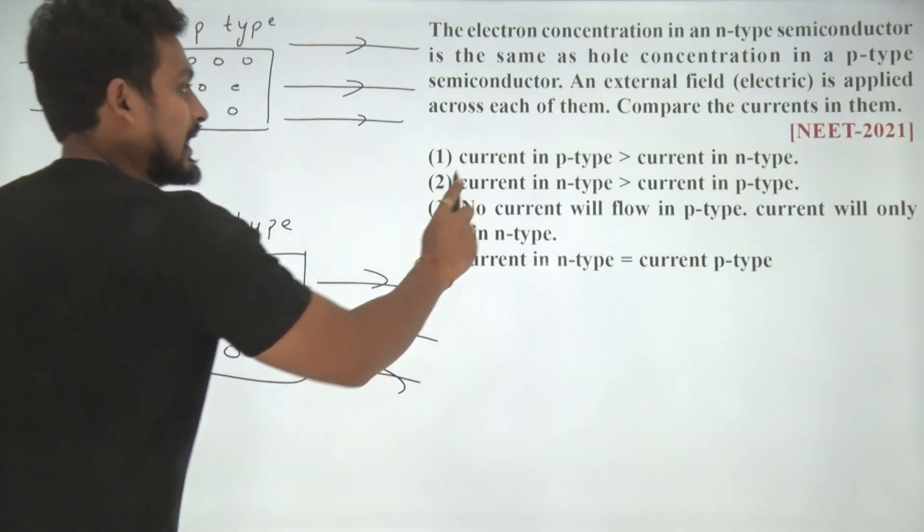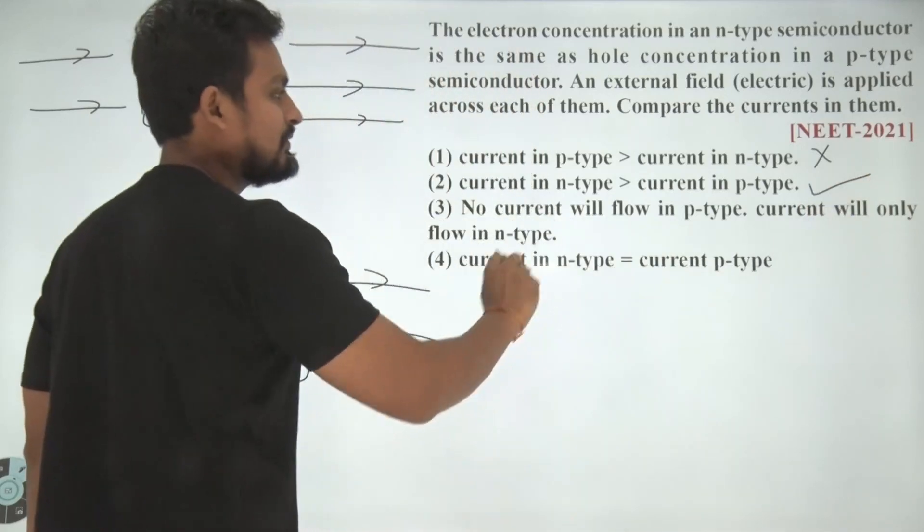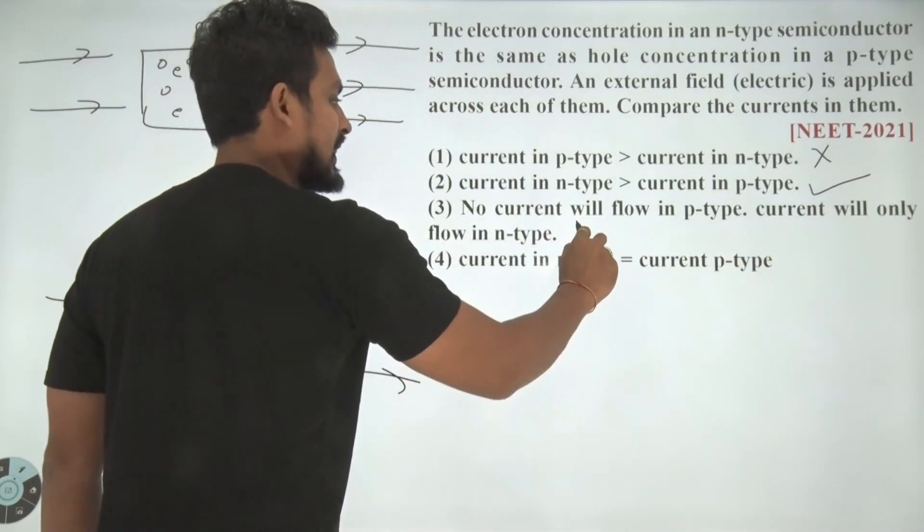Therefore, can I say, current in P type is greater? No. Current in N type? Yes. No current will flow in P type and current will flow only in N type? No. This is wrong.